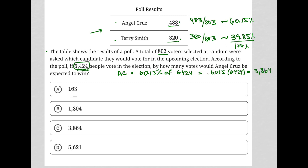We'd expect Terry Smith to get the rest — 6424 minus 3864, which using the calculator equals 2,560 votes.